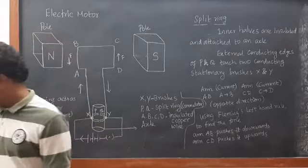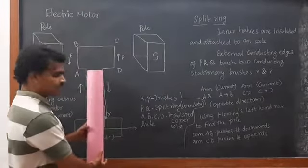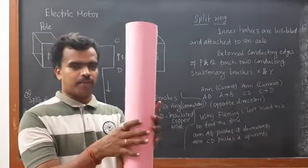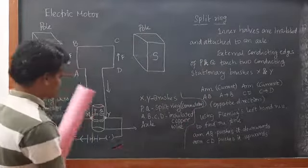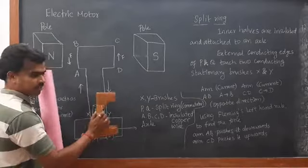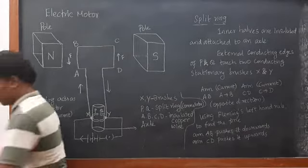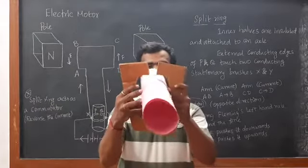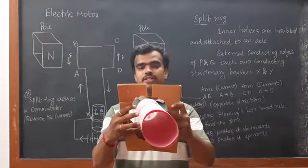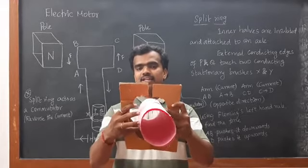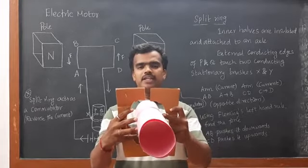How is it working? Let's go with a small demo. This cardboard is acting as the axle now. And this one will act as the split ring. This is the split ring — it will hold like that. Similarly, I have one more split ring. These two split rings will never touch each other — remember that. The pink-colored cardboard disc is the axle, and the two brown-colored cardboard sheets are the split rings.